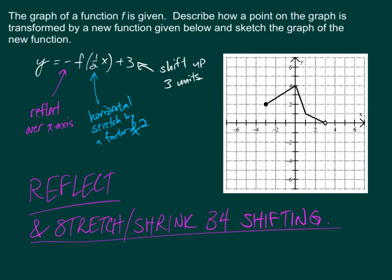The graph of a function f is given. Describe how the point on the new graph is transformed by a new function, and sketch the graph of the new function. The negative tells you to reflect over the x-axis. The 1/2 inside the argument is a horizontal stretch by a factor of 2. And the plus 3 is a shift up 3 units. One thing you'll want to do is reflect and stretch or shrink before doing any shifting.